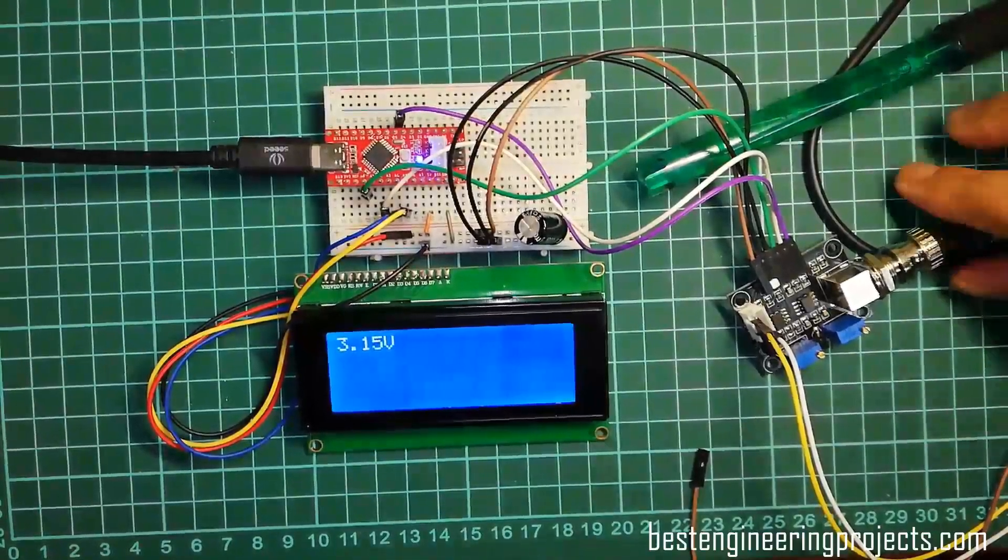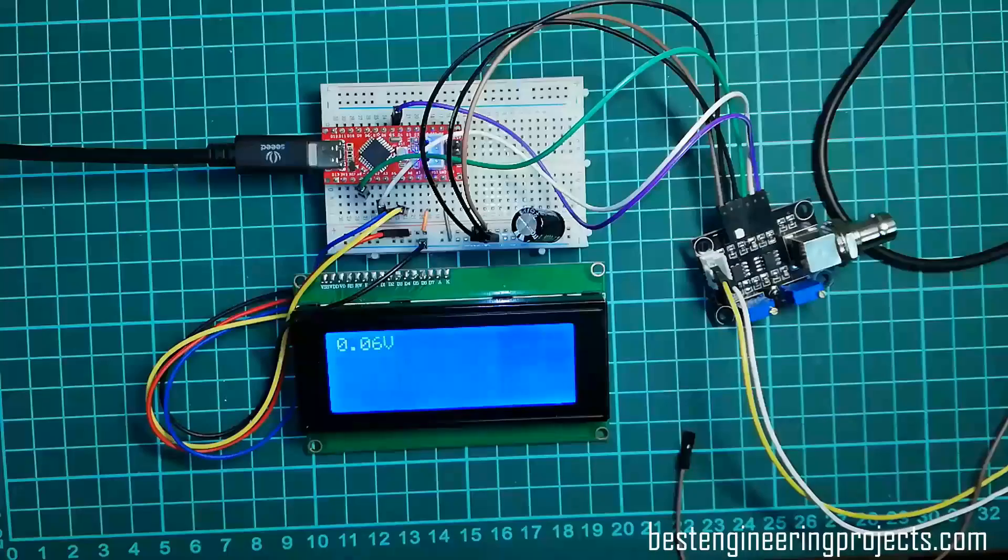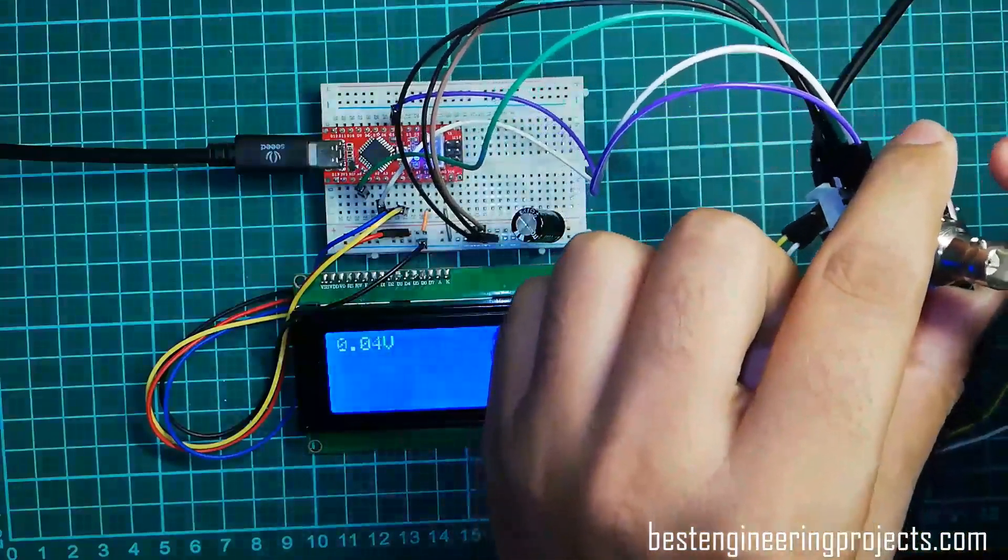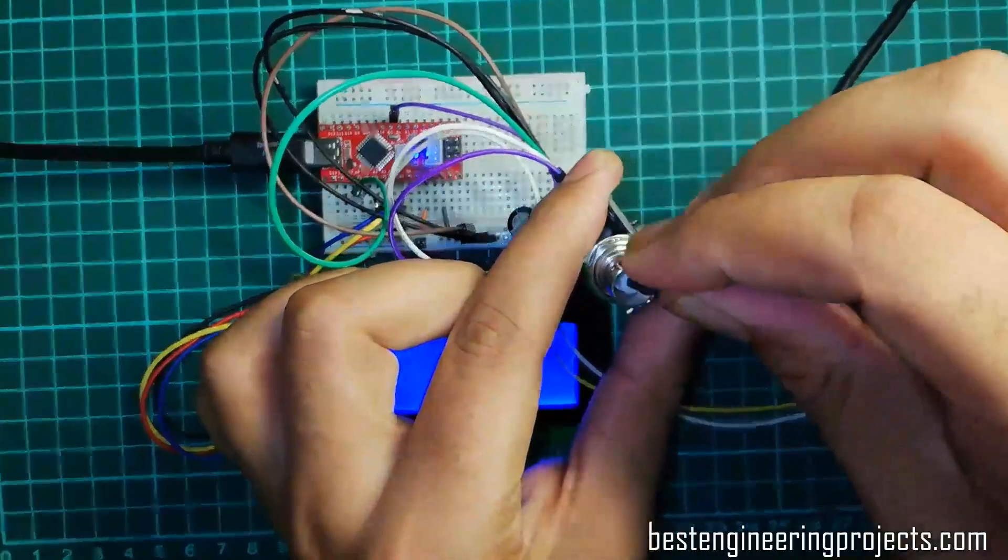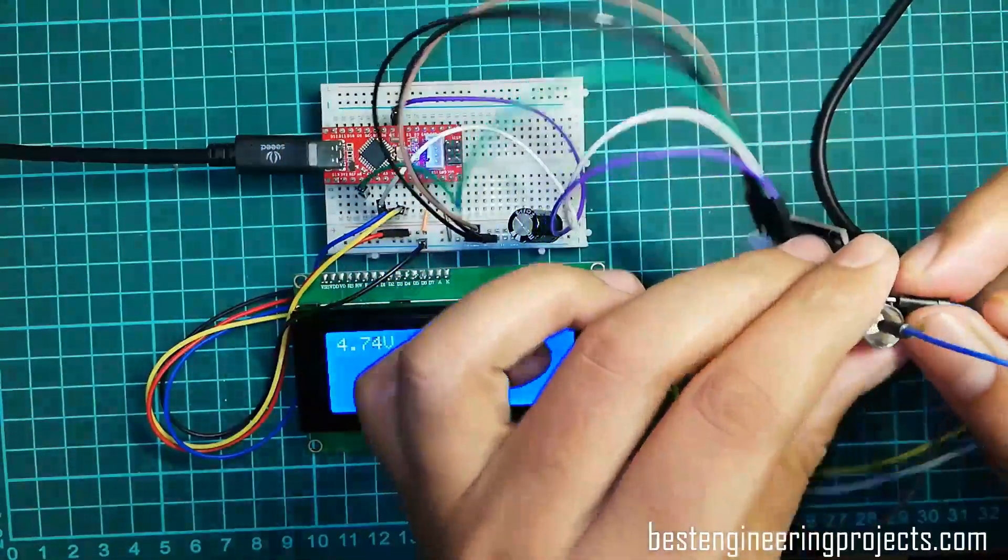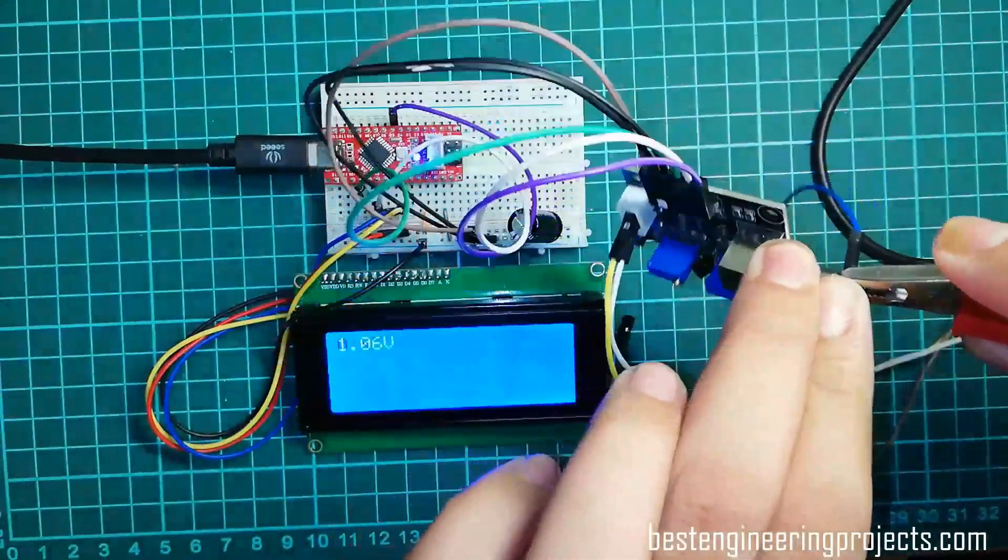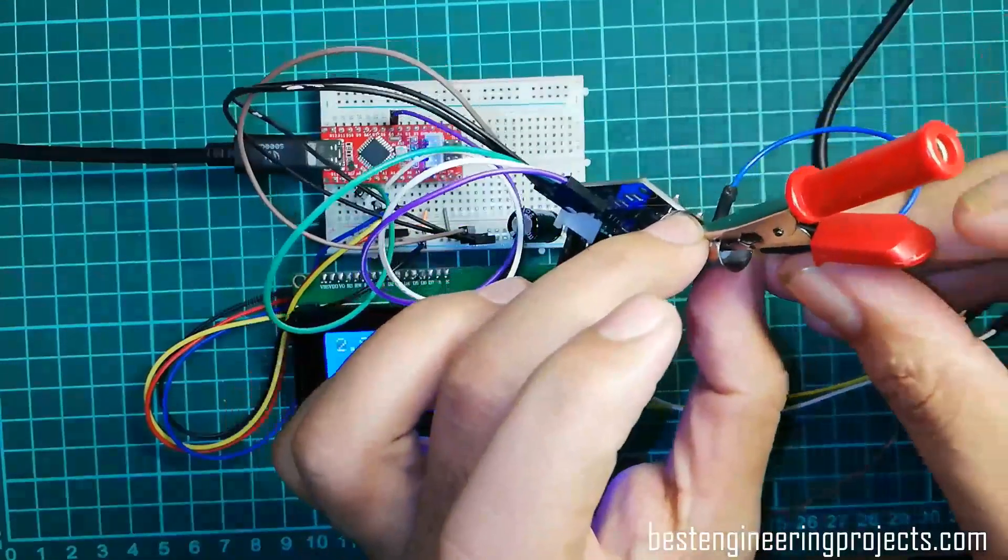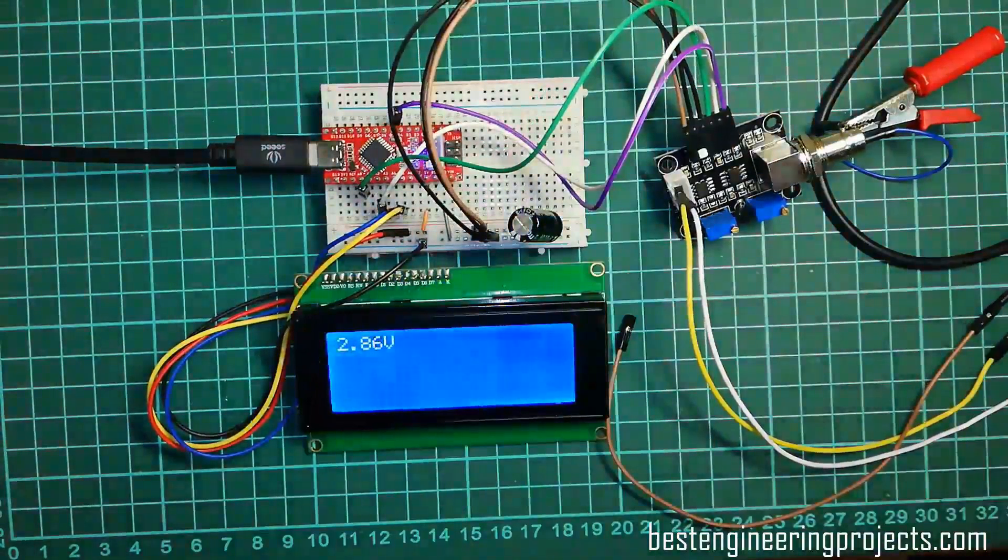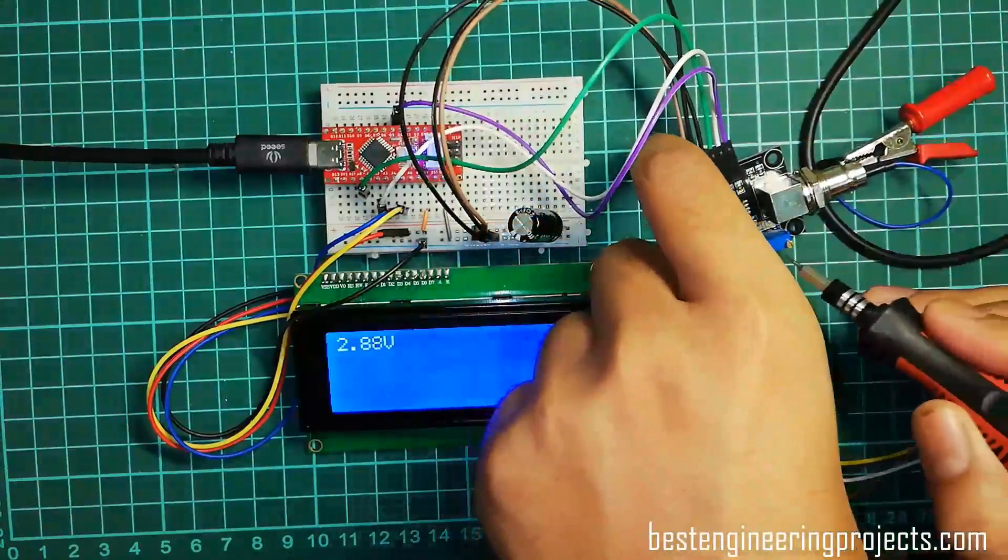Step 3: Remove this electrode from the BNC connector and then insert this inside connector with outside. For that, I am taking the help of this crocodile connector. And then, adjust this potentiometer for offset calibration, closer to the BNC connector.